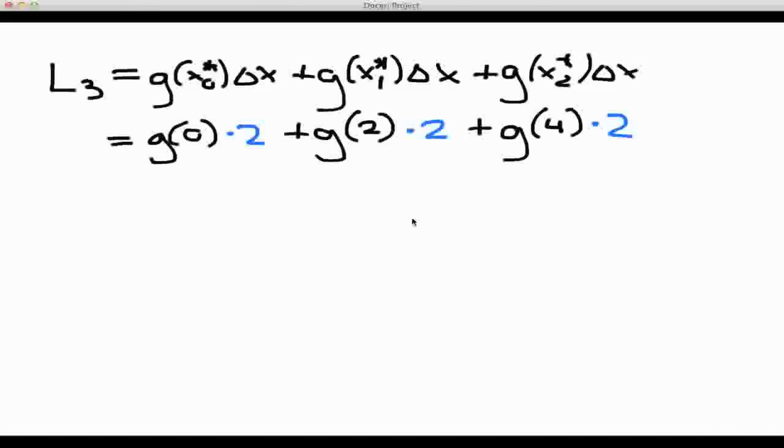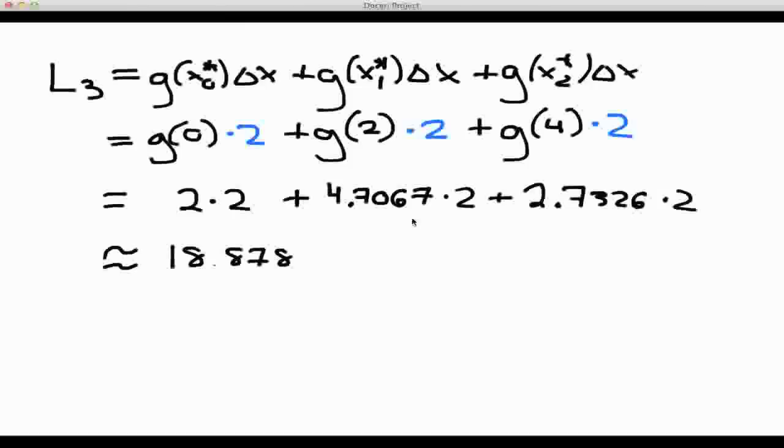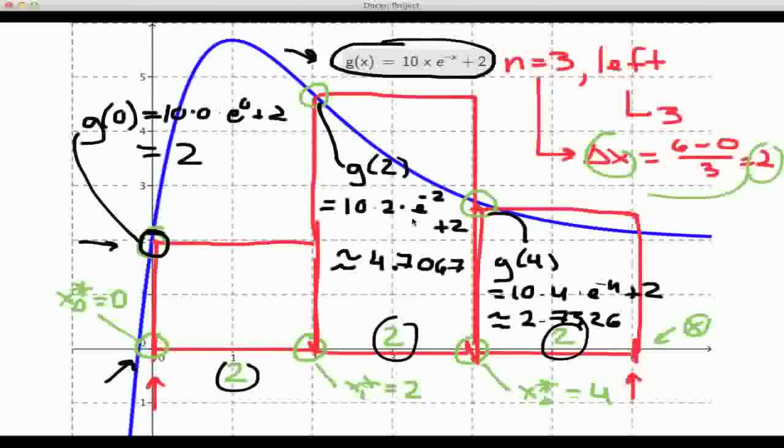Now let's just copy in our estimates from the g function that we calculated on the previous page. So g of 0 was equal to 2 times 2 from the width. g of 2 was equal to 4.7067, or approximately equal to that, times 2, plus g of 4, which came out to be about 2.7326 times 2. So now when you do all the math that's in front of you here, this will give you a value of about 18.8787. That's the value of L3, and that is approximately equal to the area under the curve, the blue curve, between 0 and 6.